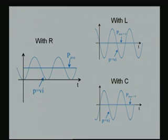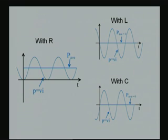Let us put them all together and compare. With R you have a power waveform at twice the frequency of the input sinusoidal voltage, DC shifted with a finite non-zero average power. In the case of the inductive load and the capacitive load, the average power is absolutely 0 — only the power waveform has a 180-degree phase shift with respect to each other. This is the comparison of the power waveform for the R, L, and C circuits.